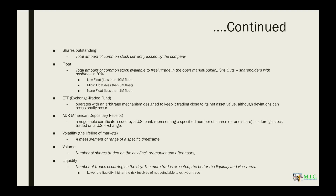The next set of definitions: shares outstanding is the total amount of common stock currently issued by the company. The float is the total amount of common stock available to freely trade in the open market. To determine the float, you take the shares outstanding and minus any shareholders with positions greater than 10% — these are considered insiders, and in order for them to sell any of their position they have to file. Low floats are generally anything less than 10 million shares. Micro float is anything less than 3 million. Nano float is less than 1 million. The lower the float, the higher the risk.